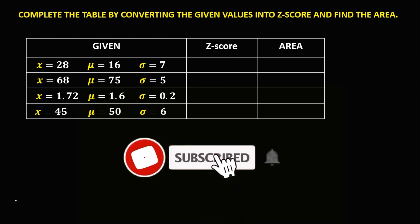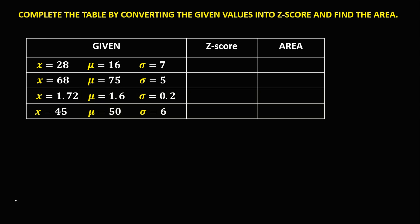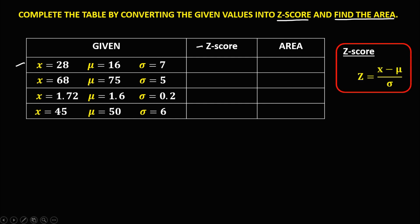Welcome to MathStoria. Let's have this topic: complete the table by converting the given values into Z-score and find the area. To convert these values into Z-score, we use this formula: Z equals the X value minus the mean, over the standard deviation.